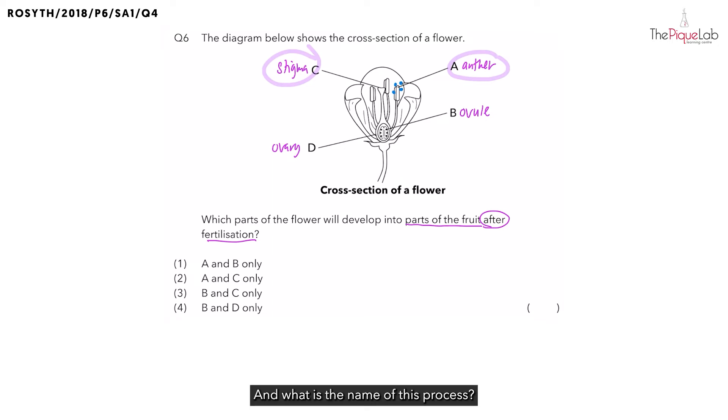And what is the name of this process? This process is called pollination. I'm going to draw some of the blue dots on the stigma to show that pollination has taken place.